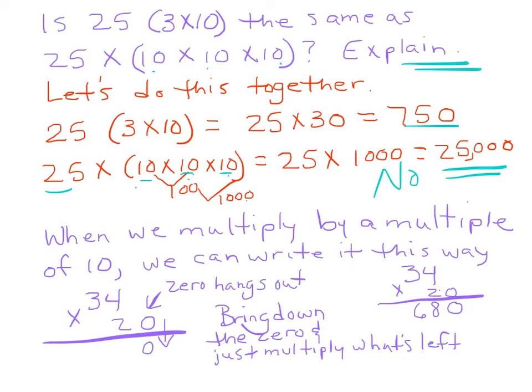So when we multiply by a multiple of 10, we can write it this way. You can do 34 times 20. And you see how the zero kind of hangs out here. Not everybody likes doing it this way. I don't care one way or the other. I think that it makes it nice and easy for you to go, oh, here's a zero. Let me just put this one down here. Just right down there. Done. So now, I don't even have to think about it. Done. And I can just multiply 34 times 2, or 4 times 2 is 8, 2 times 3 is 6. 680. Done. So you bring down the zero, and you just multiply what's left. So you just bring down the zero, multiply what's left. It's a nice, easy way to do it.